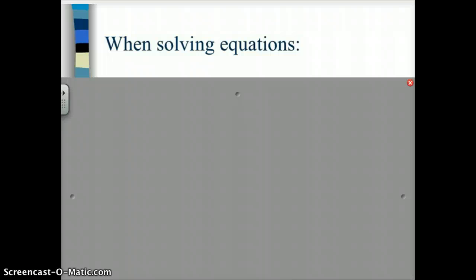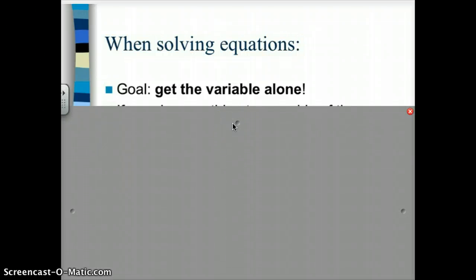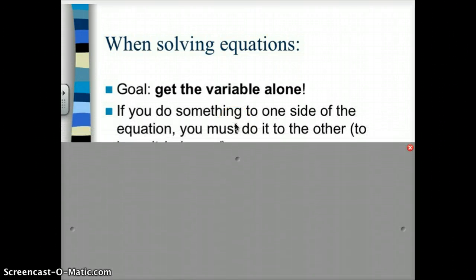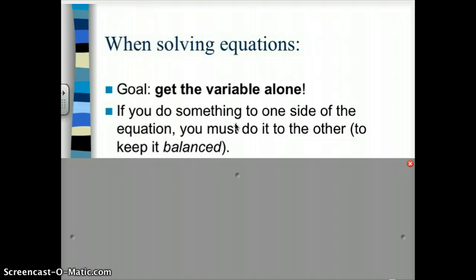In solving equations, there are several things you want to keep in mind. Your goal is to get the variable alone — figure out what x or y or n, or whatever it is, equals — so it needs to be all by itself on one side of the equation. If you do something to one side of the equation, you must do it to the other to keep it balanced.